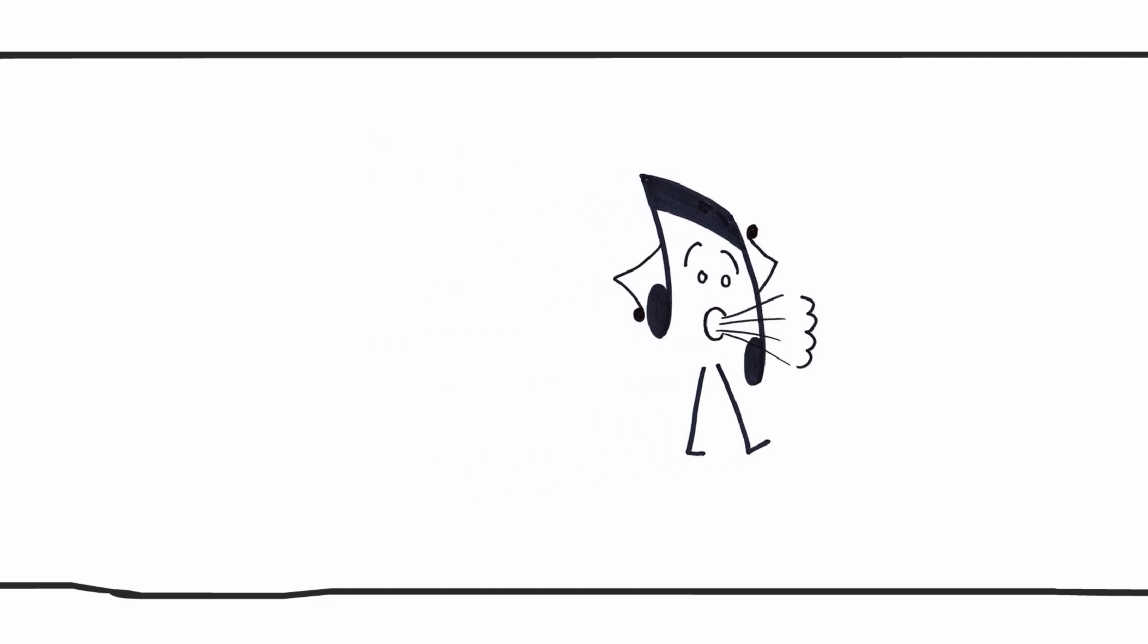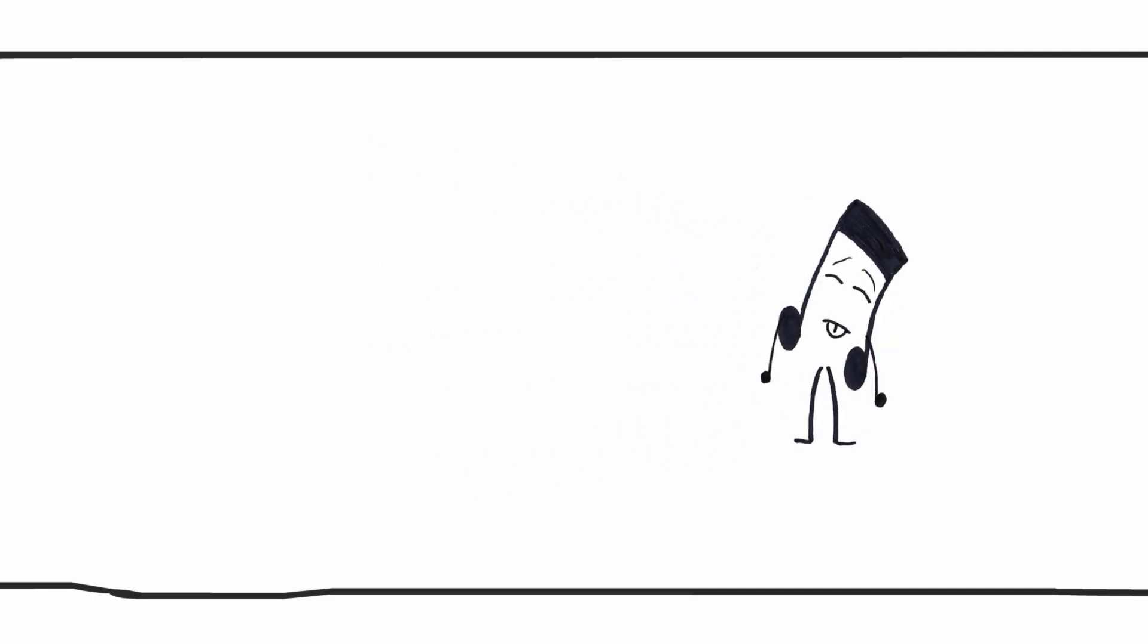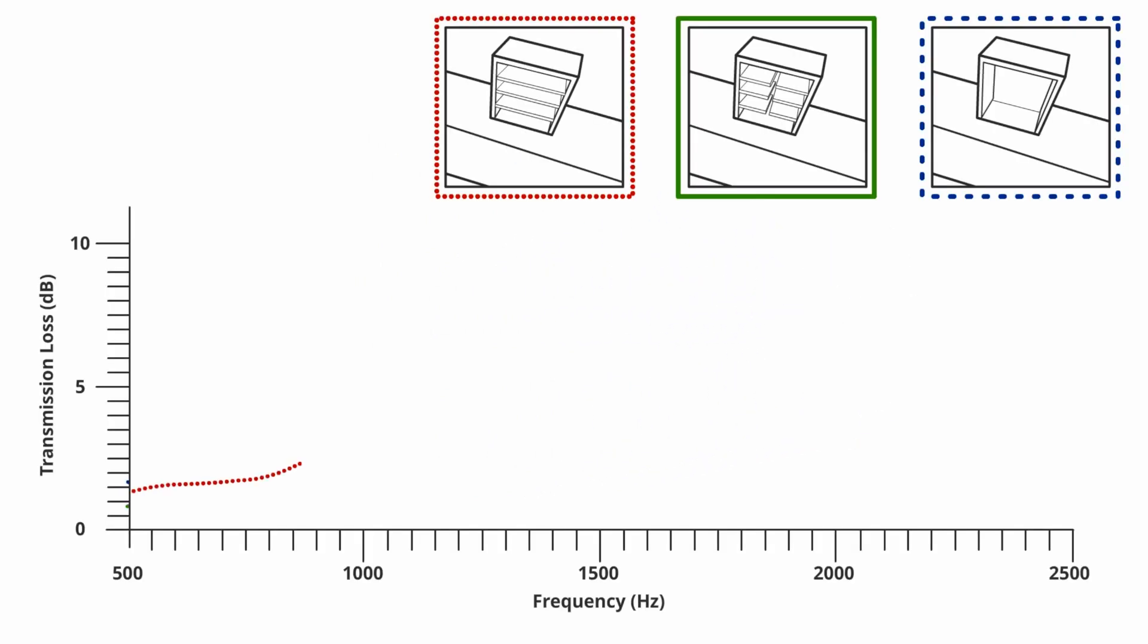In experiments, a resonator made of our metamaterial reduces noise at half the frequency compared to a conventional resonator at the same size. So we can use a smaller resonator to reduce noise at a given frequency.